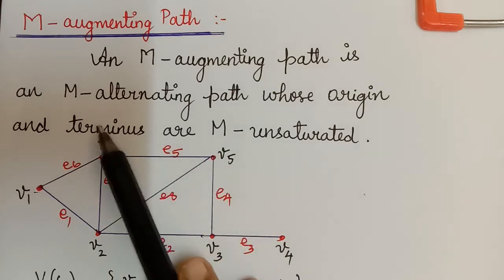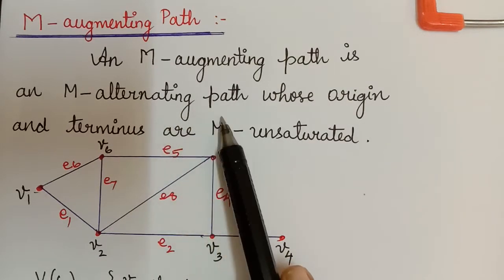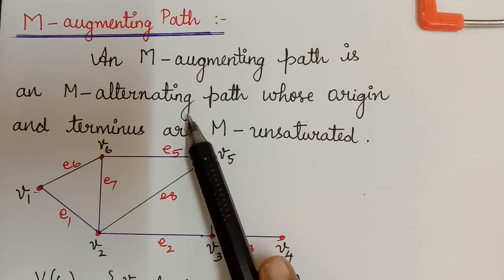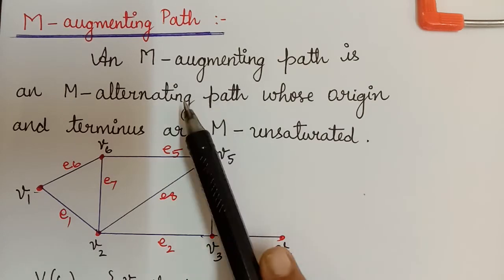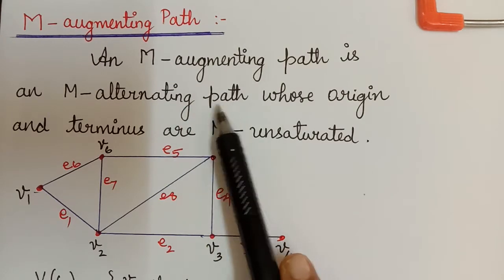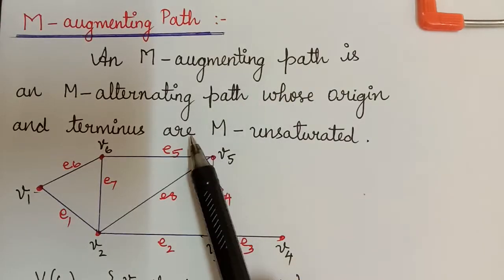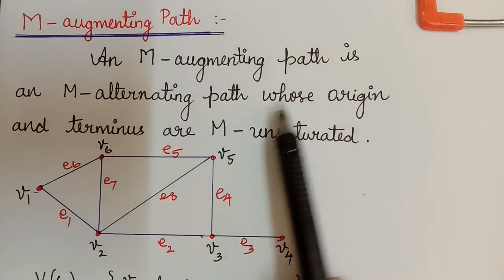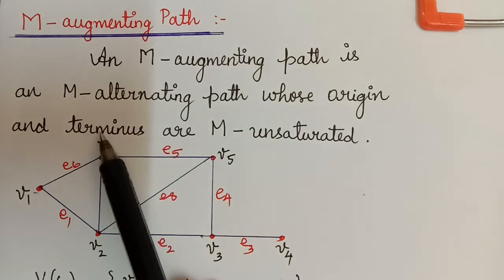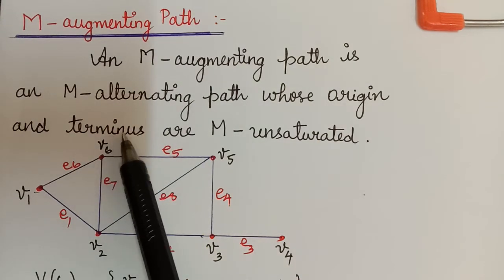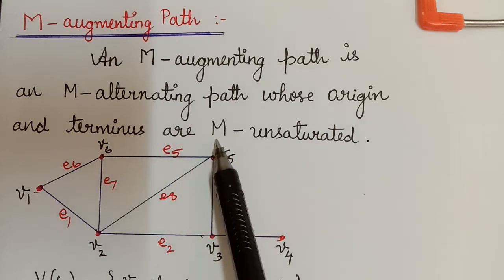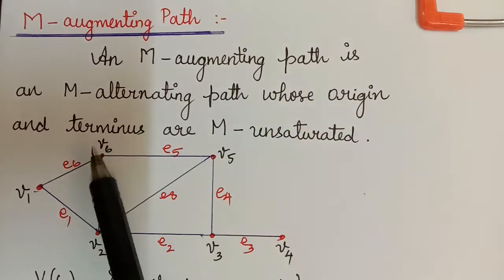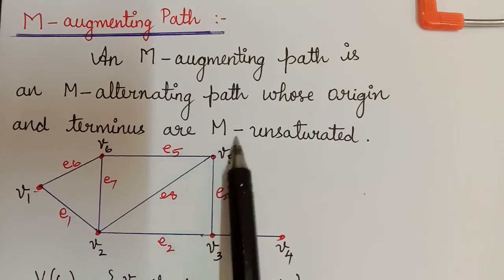An M alternating path we have already learnt. An M augmenting path is an M alternating path only. The only difference is the origin and the terminus of the M augmenting path will be M unsaturated, which means that the origin vertex and the terminus vertex will not be matched under the matching M.